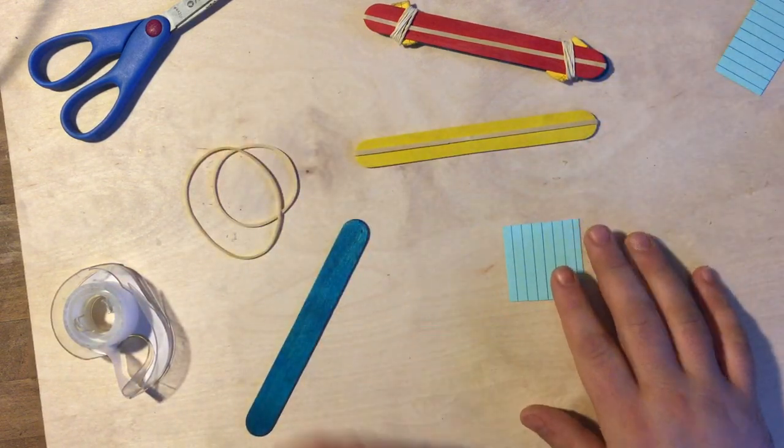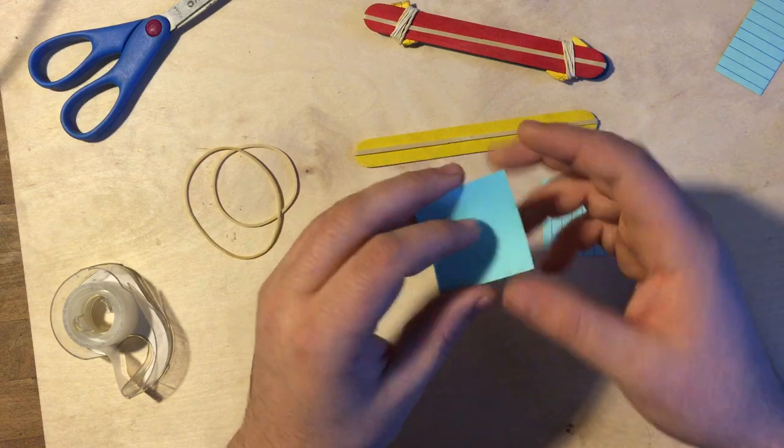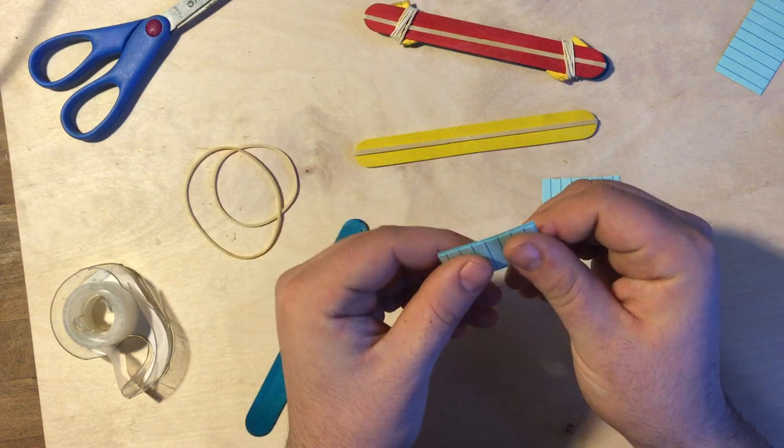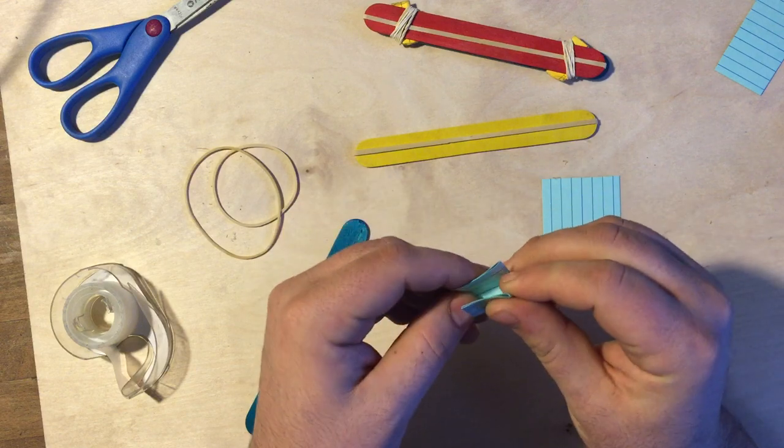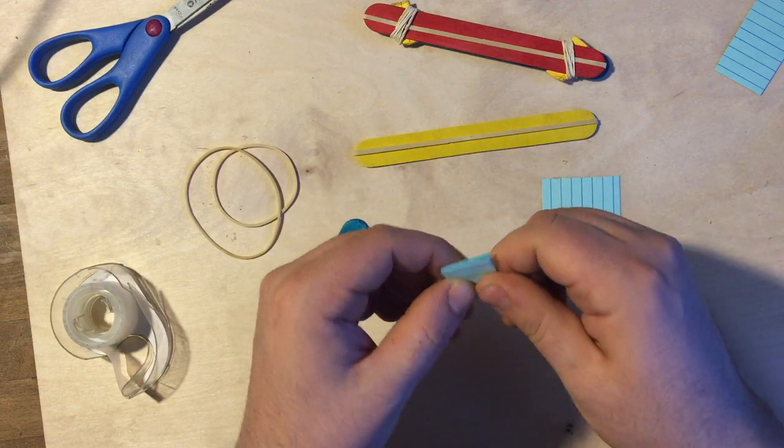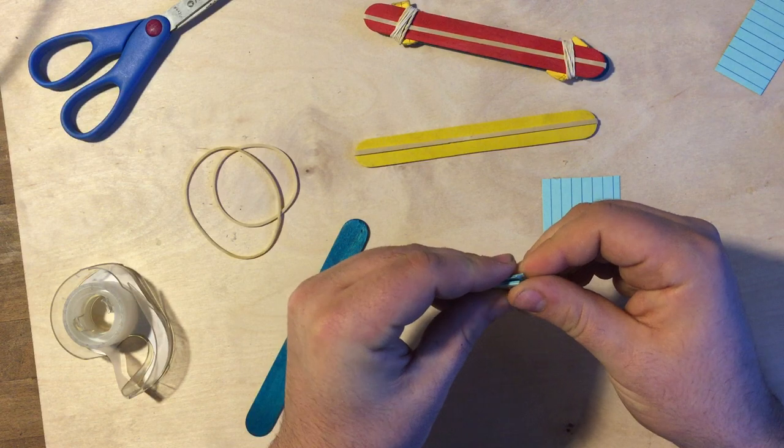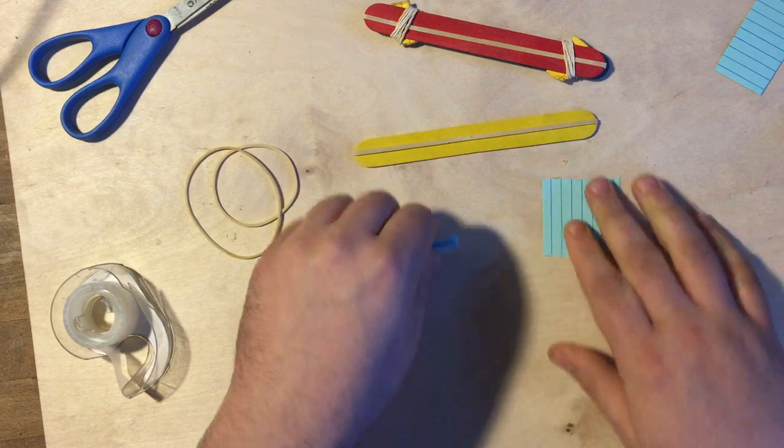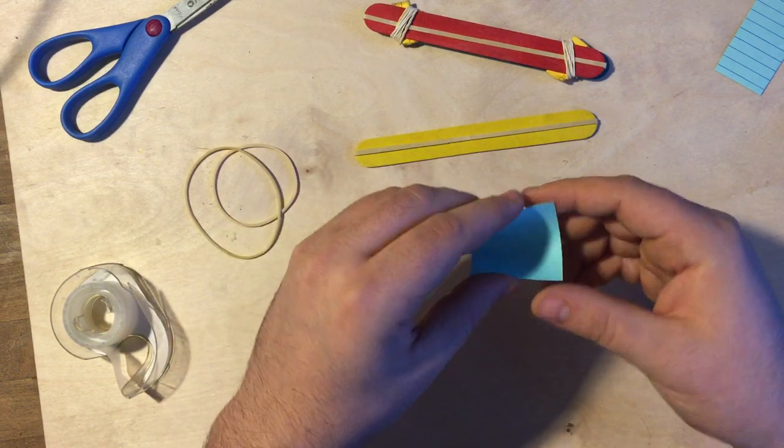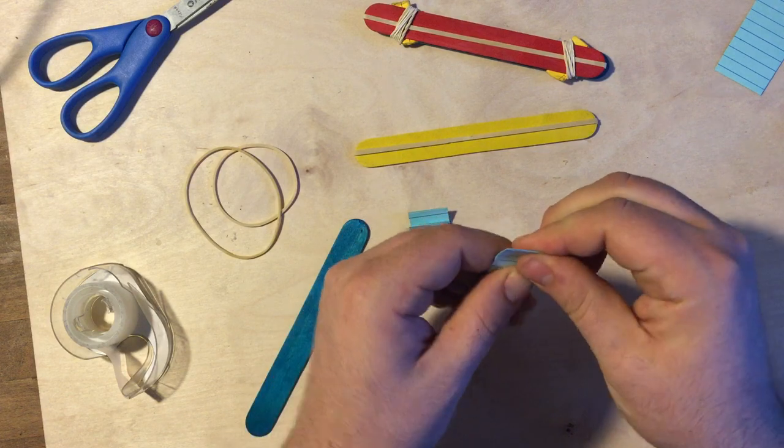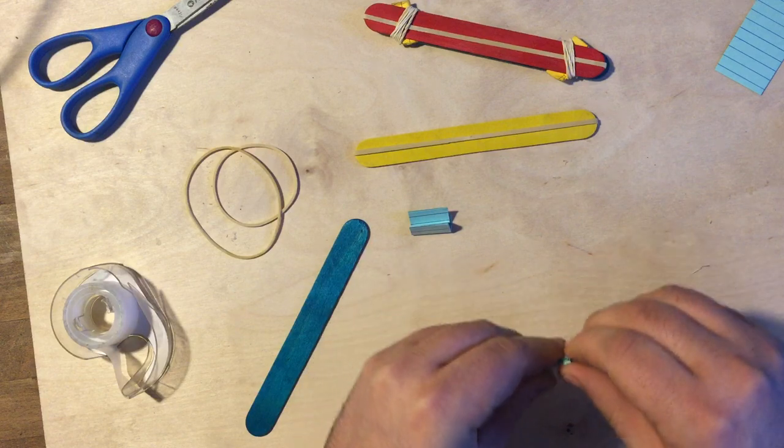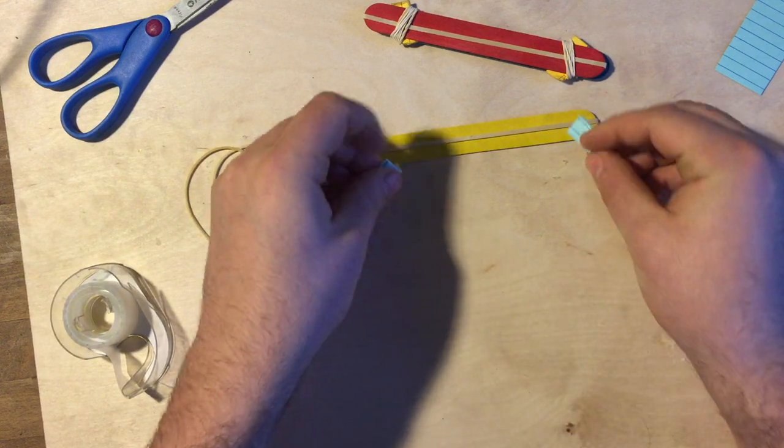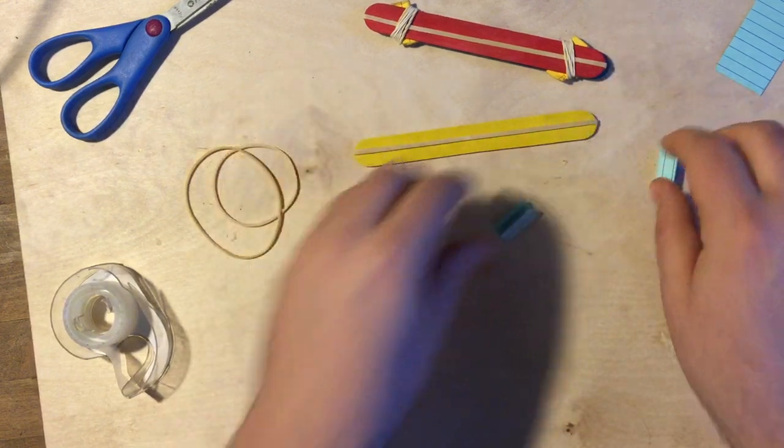My second step I'm going to take my index card squares and fold them each three times in half. So folding this one once in half and folding it twice in half and then folding it once more in half. So there's one. I'm going to do that for the other one as well. Once in half, twice in half, three times in half. We're just using these to create some space in between our two Popsicle Sticks.